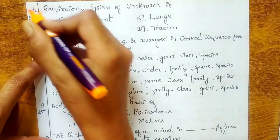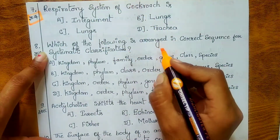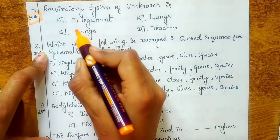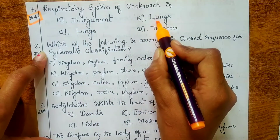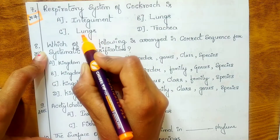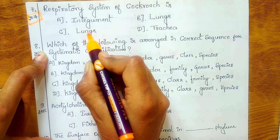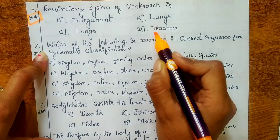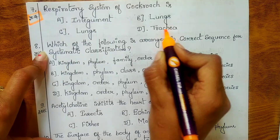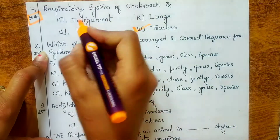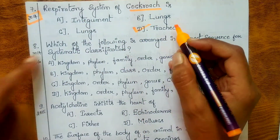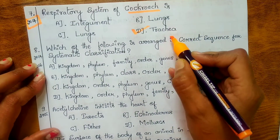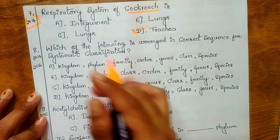Seventh question, from 2014: the respiratory system of a cockroach is which of the following? Options are: integument, lungs, and trachea. The respiratory organs of a cockroach are the trachea, which places it under phylum Arthropoda. The answer is trachea.